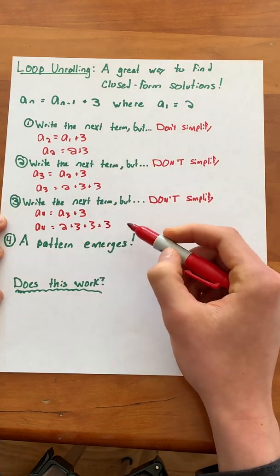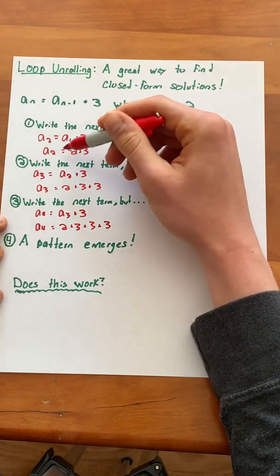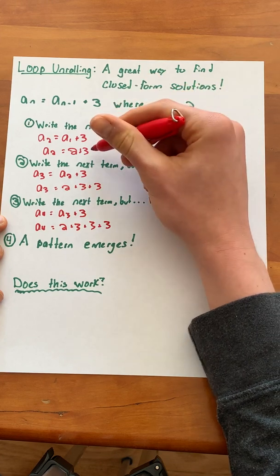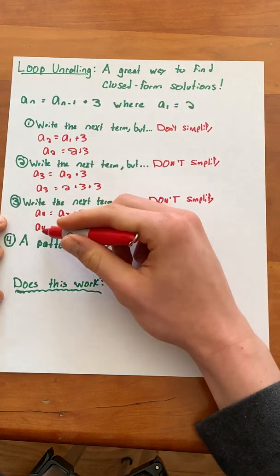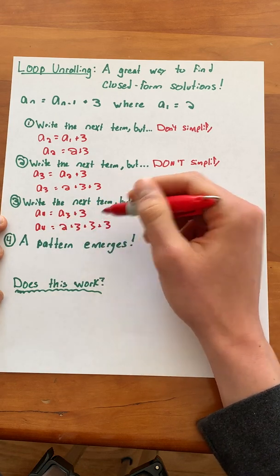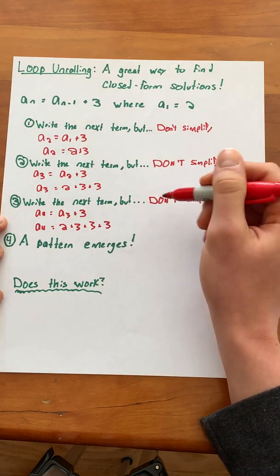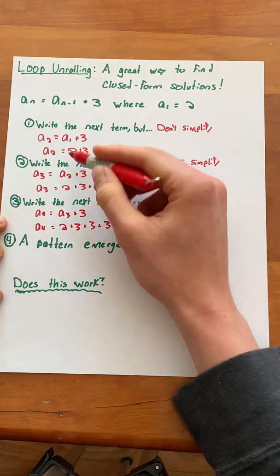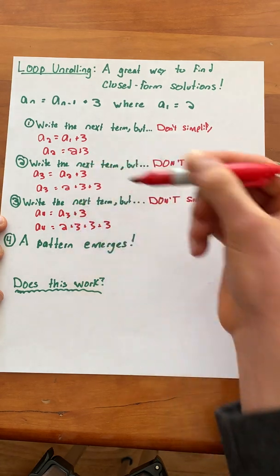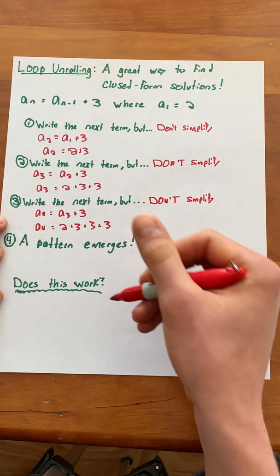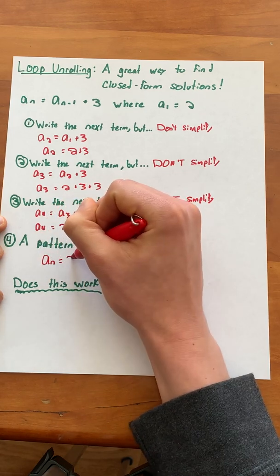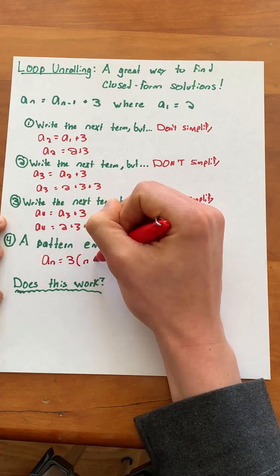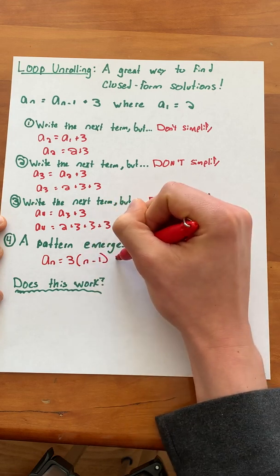We can now see that a pattern has emerged. When we had a of 2 there was one 3. When we had a of 3 there were two 3's, and when we had a of 4 there were three 3's. This means that we always have n minus 1 3's and each time we've been adding on 2 as well. So our closed form solution is a of n equals 3 times (n minus 1) plus 2.